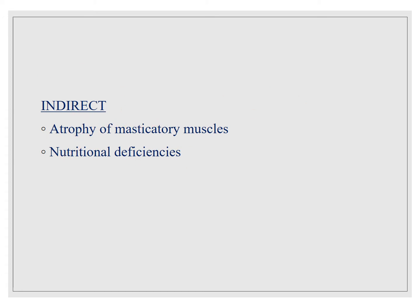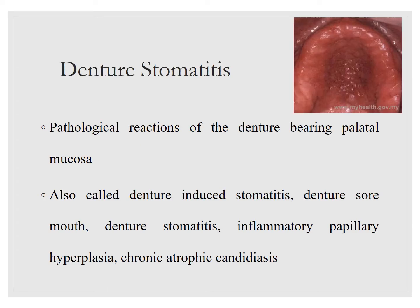For indirect sequelae, there is atrophy of masticatory muscles and nutritional deficiencies. Coming to denture stomatitis — you can appreciate in the photo the redness of where the patient was wearing the denture. It is a pathologic reaction of the denture-bearing palatal mucosa, also called denture-induced stomatitis, denture sore mouth, or chronic atrophic candidiasis, as candidiasis can also be associated.